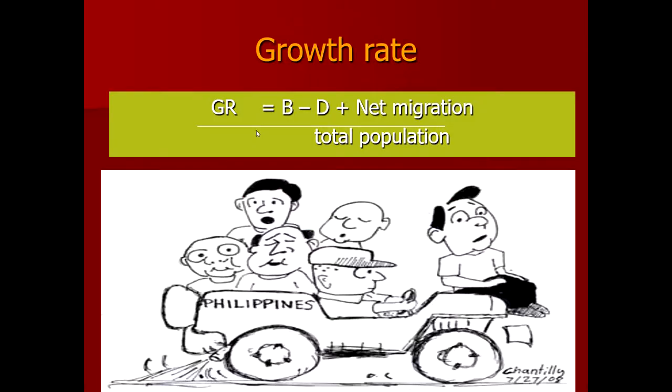Not only births and deaths affect the growth rate of a population — net migration also affects the change in population. If you subtract deaths from births, that gives one component. The net migration is calculated as in-migrations minus out-migrations. Then the natural increase plus net migration divided by the total population gives you the growth rate of a community in a specific time period.